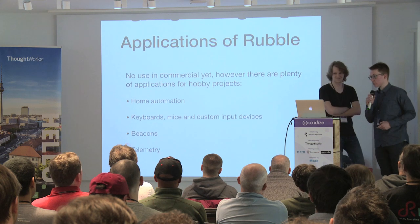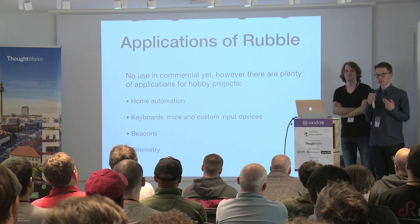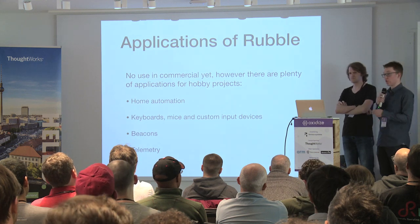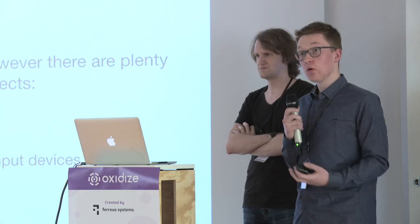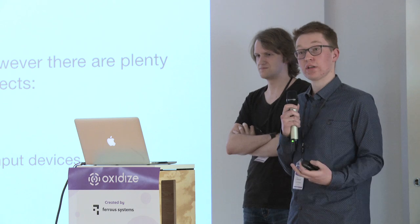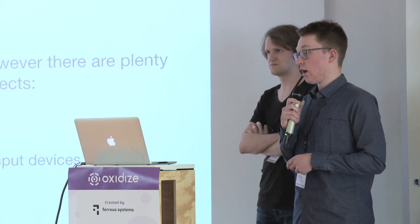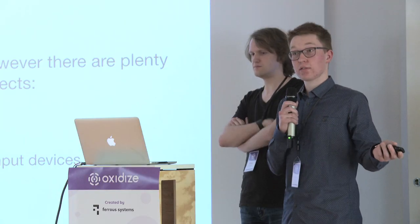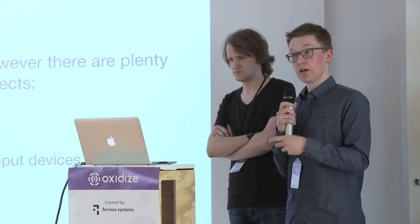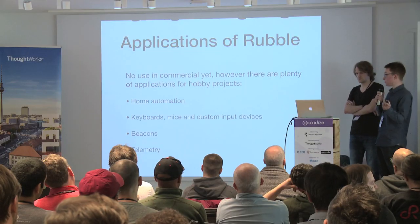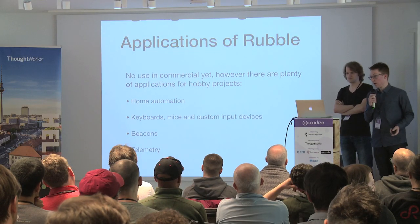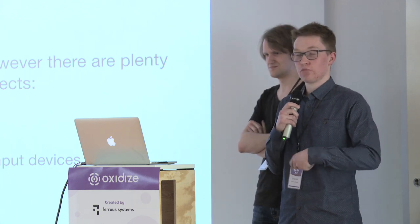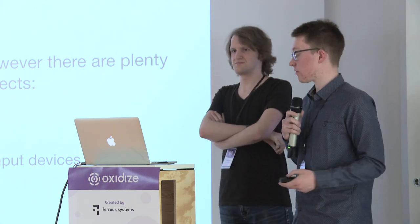There's no use in commercial projects, but there are plenty of cool things you can do for hobbyist and open source projects. That includes home automation — we plan on adding HomeKit support as its own crate. Other HID devices could be added. Beacons: if anyone scans for an Eddystone beacon right now, there will be one that takes you to the Rubble repository. It's also an easy way of adding telemetry into any drones, model rockets, or similar projects.